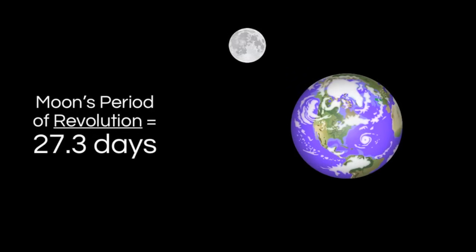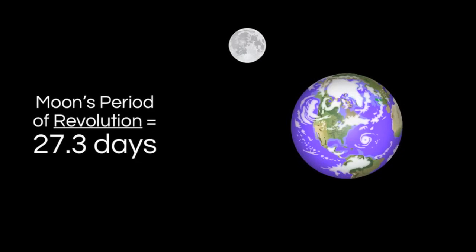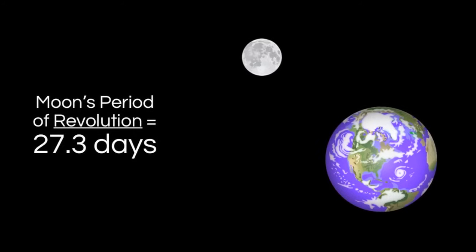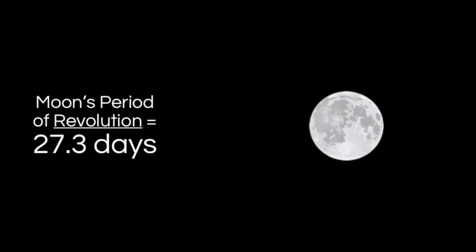The moon orbits the Earth, and this takes approximately 27.3 days. We refer to this as the moon's period of revolution. At the same time the moon is orbiting the Earth, the moon is also spinning on an axis. We refer to this motion as rotation.